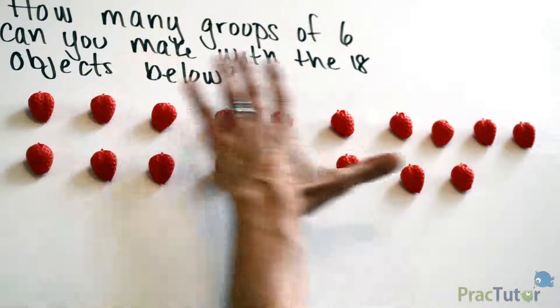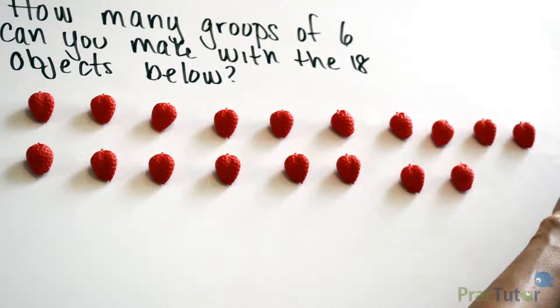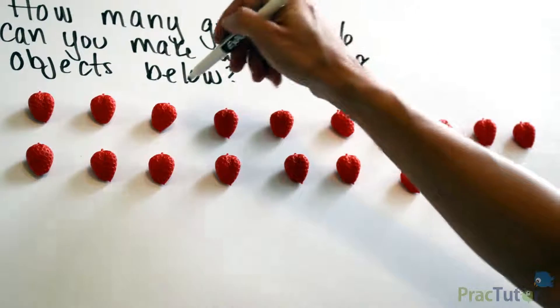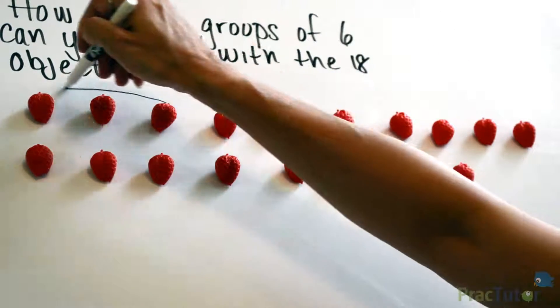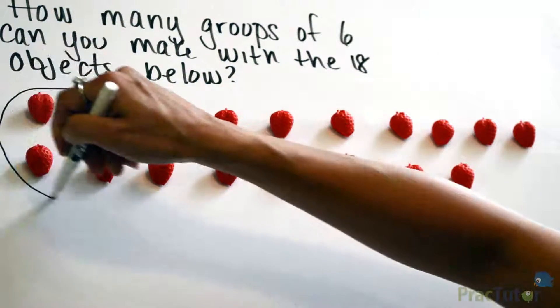We have a total of 18 strawberries and we're going to make groups of 6 with these strawberries. So let's begin. We're going to find our first group and create it by circling these 6 strawberries.